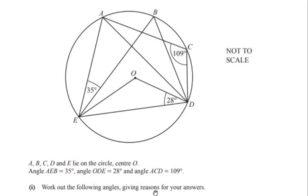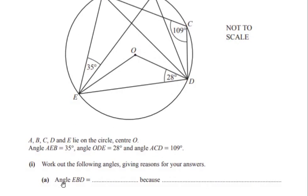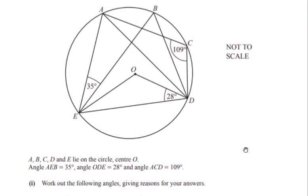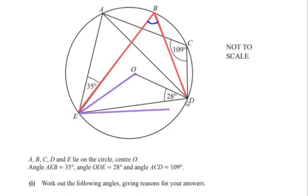We need to find the following angles giving reasons for our answers. For the first question we need to find angle EBD — that is this angle here between E, B and D. To begin with, we can see that there are many triangles and quadrilaterals inside the given circle, so let us start with the innermost triangle, which is triangle OED.